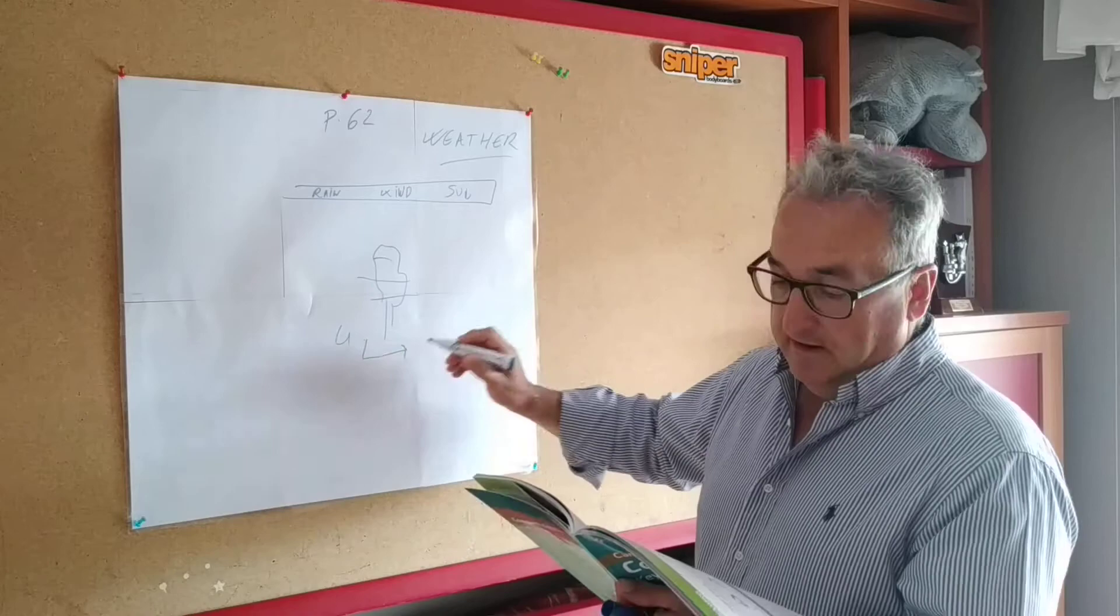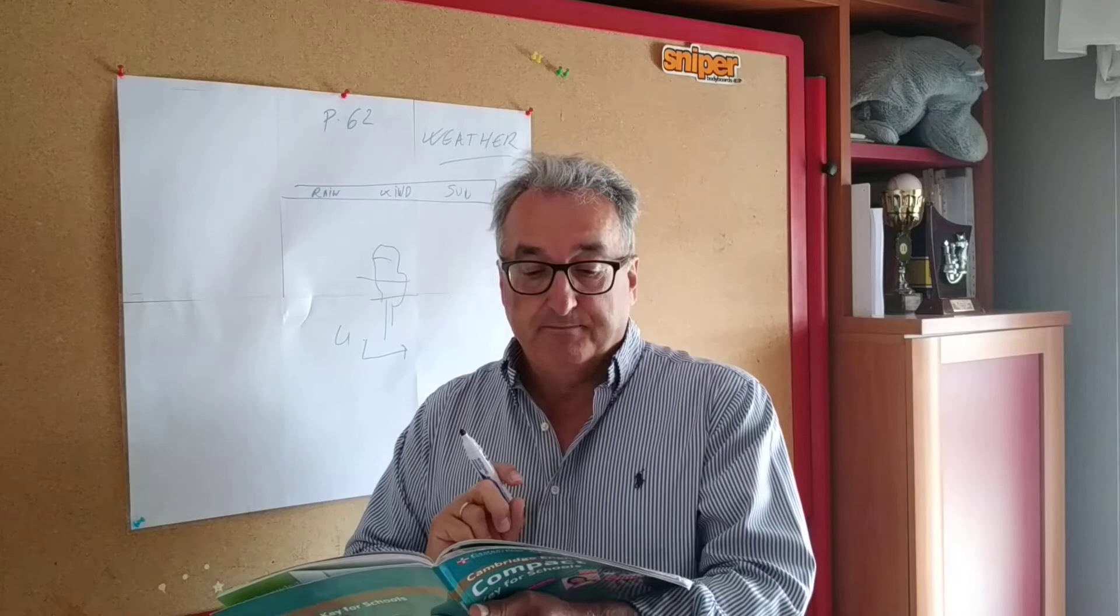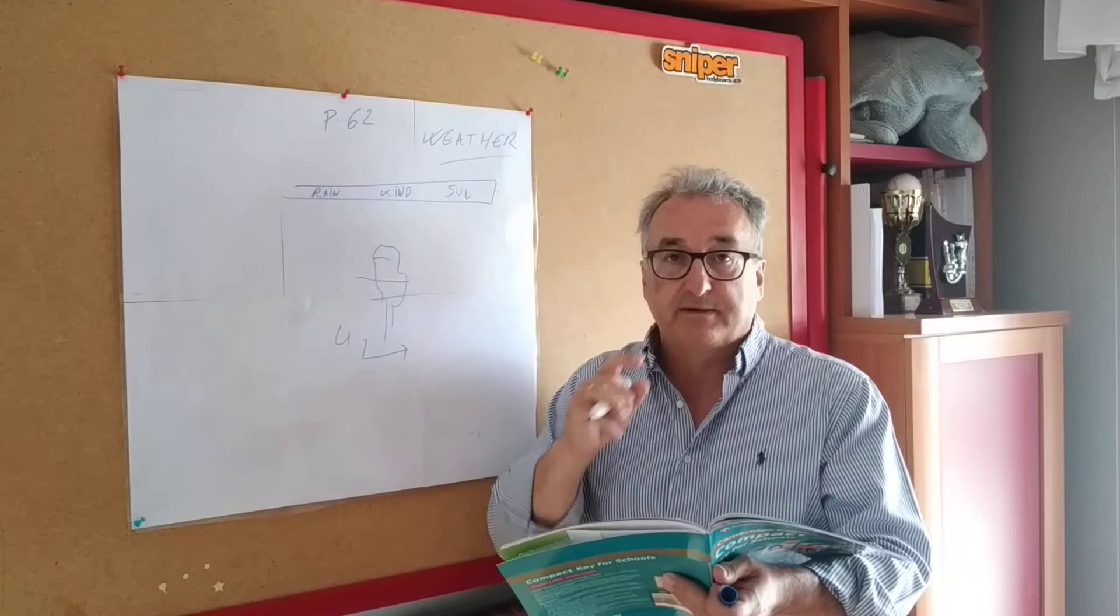For example number 4: thunderstorm, wind, sun, storm, snow, rain. Which 6 pictures are represented by these words? There are 3 words you don't need. There are 3 words that are not represented there.